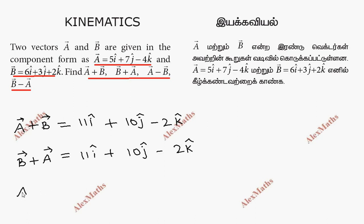If I do A vector minus B vector, I do the subtraction. So corresponding i components: 5i cap minus 6i cap gives minus i cap. 7j cap minus 3j cap gives 4j cap. And minus 4k cap minus 2k cap gives minus 6k cap.